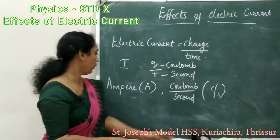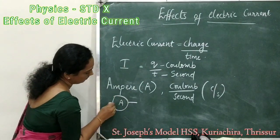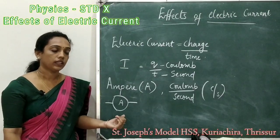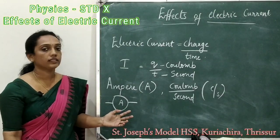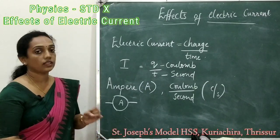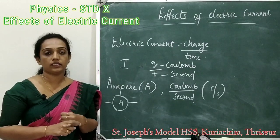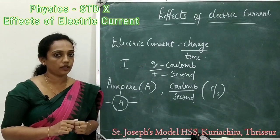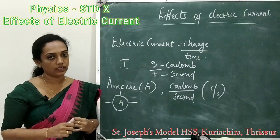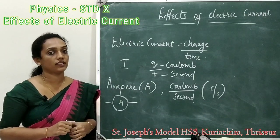The symbol of ammeter is like this. If this symbol is shown in an electrical circuit, it means that the ammeter is connected in that circuit. So current is the amount of charge that flows through a conductor in unit time, the unit of current is ampere or coulomb per second, and ammeter is the device used to measure electric current.